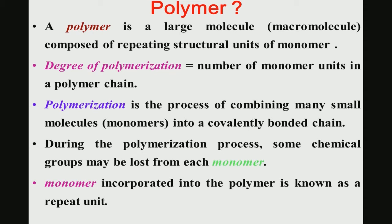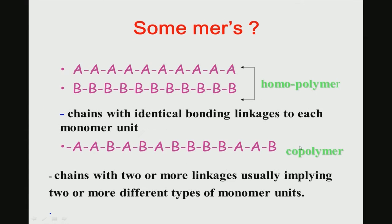A polymer is a large molecule — a macromolecular structure — composed of repeating structural units called monomers. The degree of polymerization is the total number of monomer units in a polymer chain. Polymerization is the process of combining many small molecules or monomers into a covalently bonded chain. During polymerization, some chemical groups may be lost from each monomer, and this repeat unit is called the repeat unit.